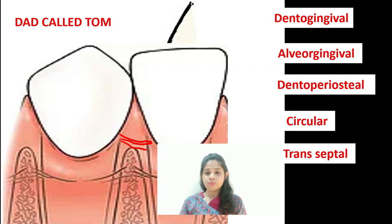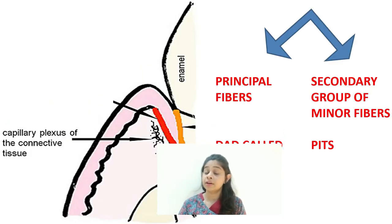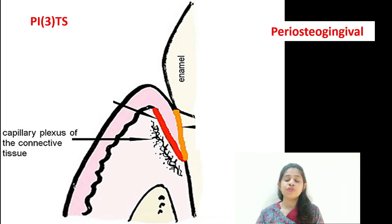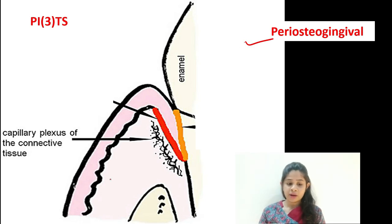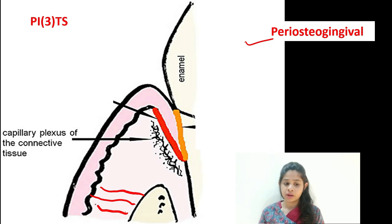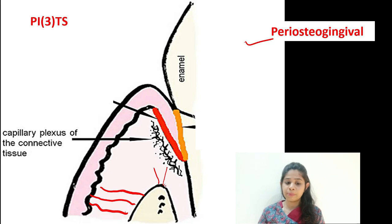So the mnemonic DAD CALLED TOM stands for: Dentogingival, Alveologingival, Dentoperosteal, Circular, and Transeptal fibers. The secondary or minor group of fibers uses the mnemonic PITS. The first group is the periosteogingival fibers, which arise from the periosteum of the alveolar bone and get attached to the attached gingiva — unlike the alveologingival fibers which arise from the crest, the periosteogingival arises from the periosteum itself.